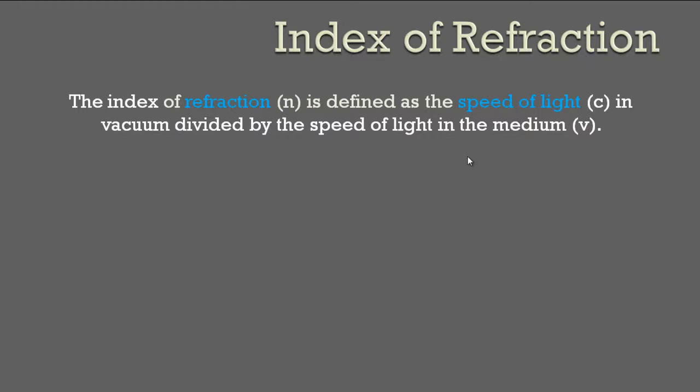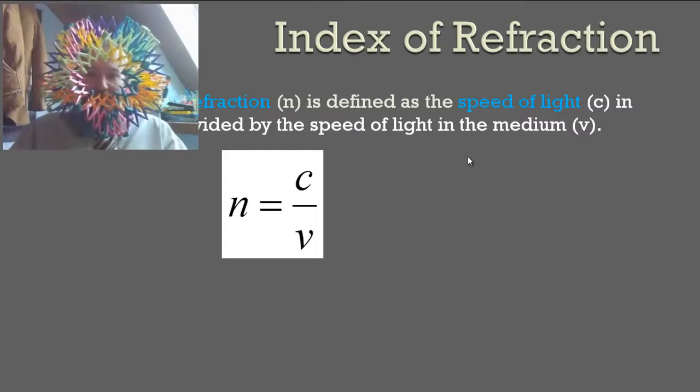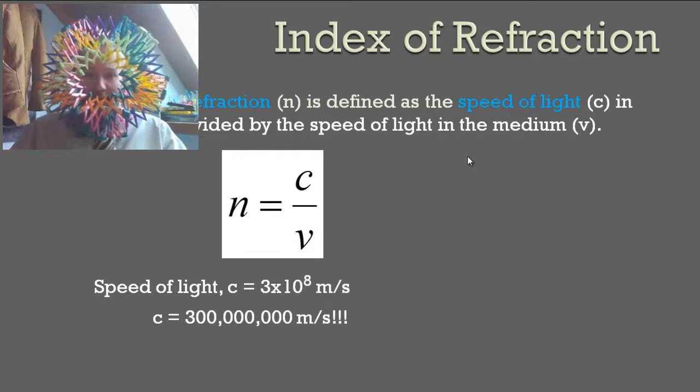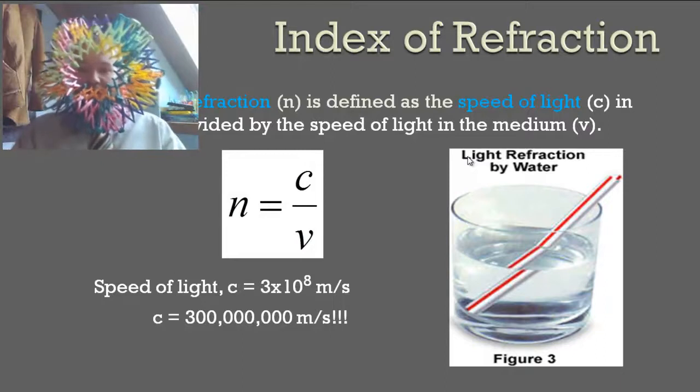The index of refraction, which the letter n is used to signify this in equations, is defined as the speed of light, which we denote as c in equations, in a vacuum divided by the speed of light in the medium. Because in the medium it's going to move slower. Mathematically, it looks like this: the index of refraction equals c over v, so n equals c over v. And the speed of light is roughly 3 times 10 to the 8 meters per second, which if you do the scientific notation out, that's 300 million meters per second, which is pretty darn fast.